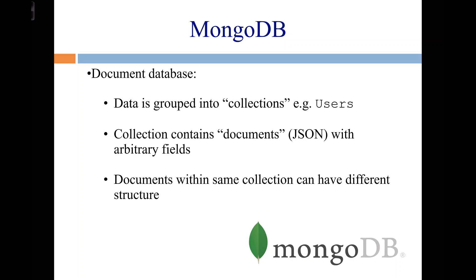MongoDB is probably among the most popular document databases. What it calls documents are just JSON objects. It's grouped similarly to an SQL database: you have a database, within the database you have collections — analogous to tables. You'd have a users collection, a books collection, something like that. Anything within any of those documents can have any structure it wants. The only structure you're giving it is by putting it into a collection with a certain name — but that doesn't mean it has to have any particular structure.